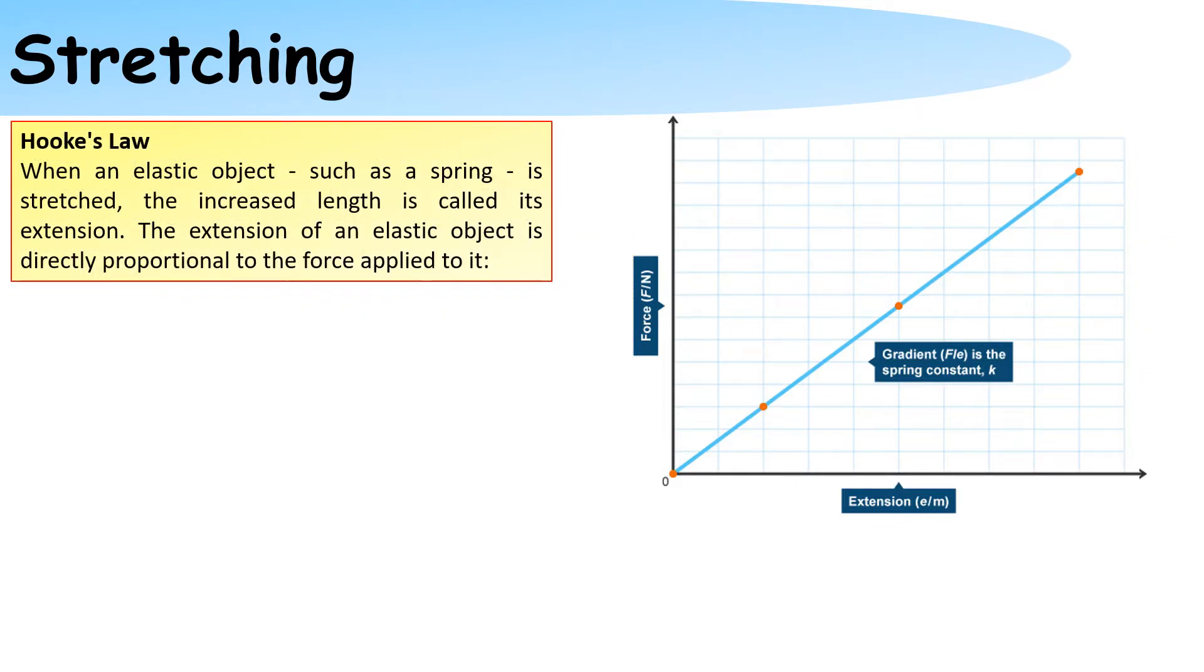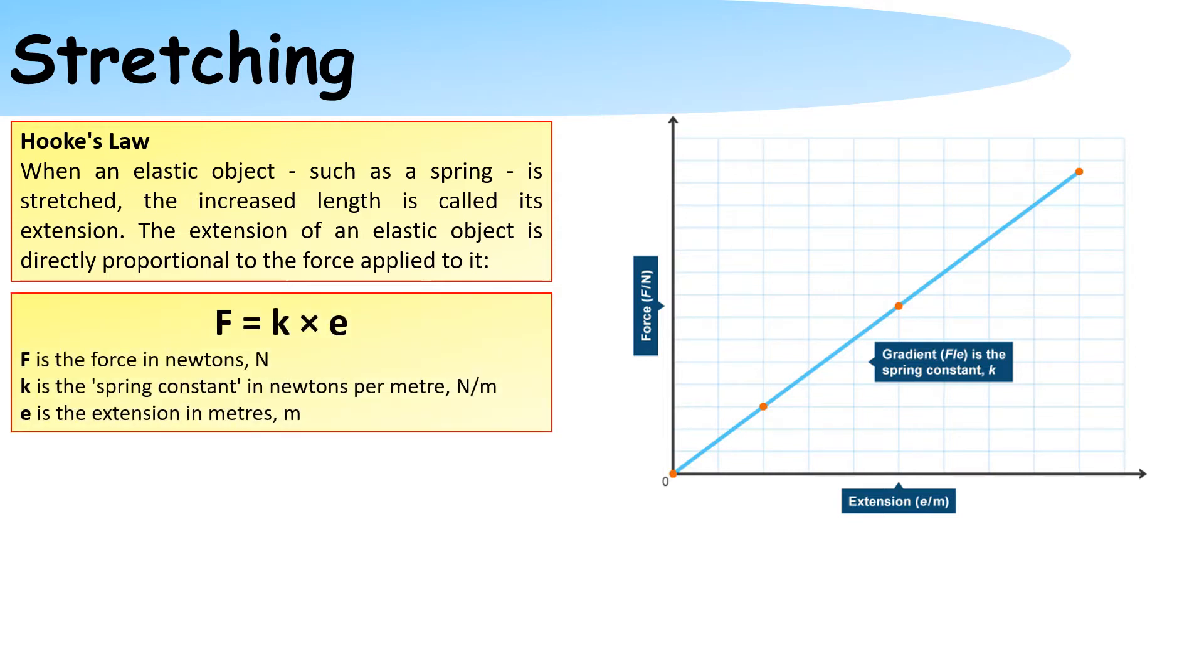When an elastic object such as a spring is stretched, this increases the length of it proportionately. This is called Hooke's Law. The equation for this is F = k × e, where F is the force in newtons, k is the spring constant in newtons per meter, and e is the extension in meters.